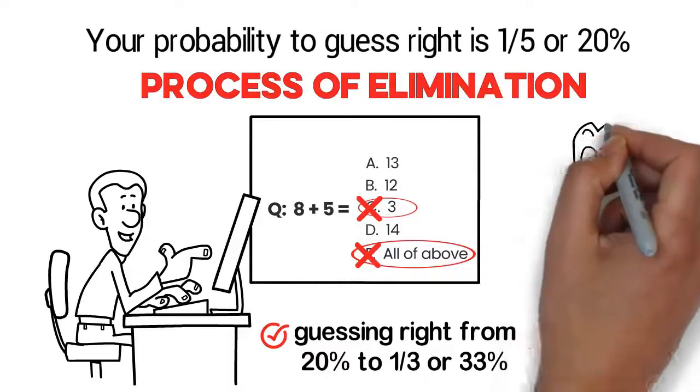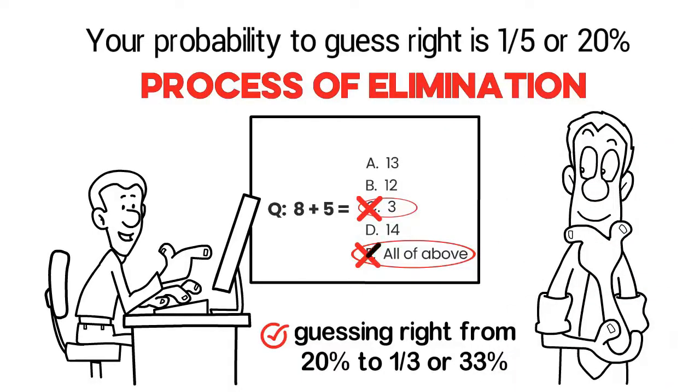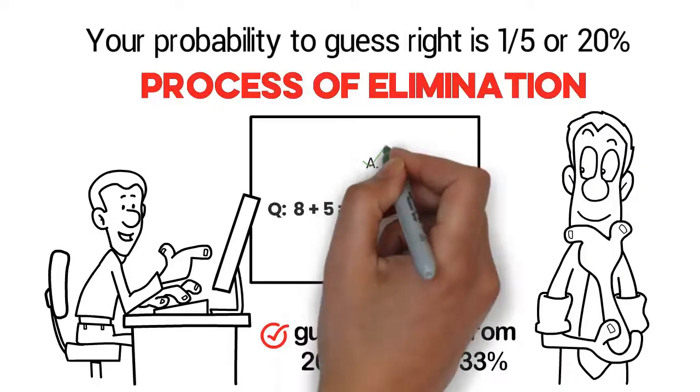So the next time you have to guess on a multiple-choice problem, why not cut out what you know is wrong, so you can get closer to what is right.